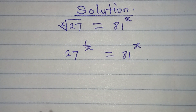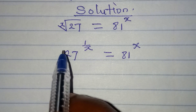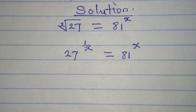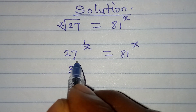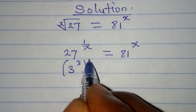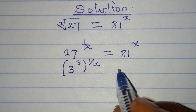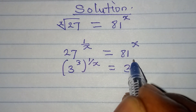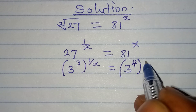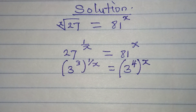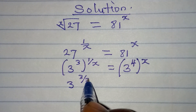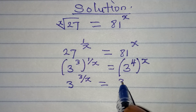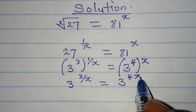Next, we'll break each side down to the same base. 27 is 3 to the power of 3, so we have 3 to the power of 3 times 1 over x. And 81 is 3 to the power of 4, so the right side becomes 3 to the power of 4x. Multiplying the exponents gives us 3 to the power of 3 over x equals 3 to the power of 4x.